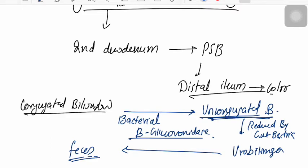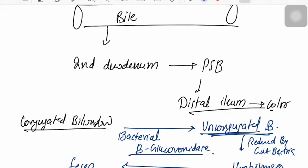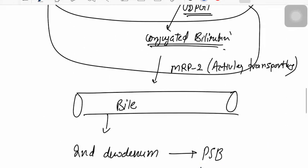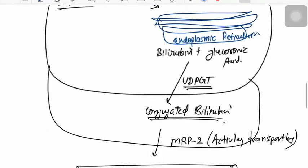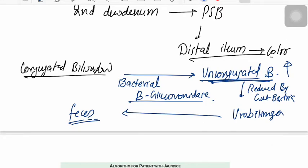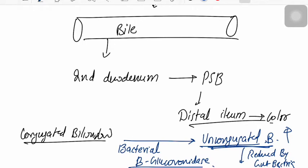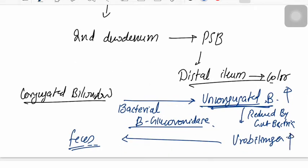It is the unconjugated bilirubin — not conjugated — that is excreted via urine. Increased urinary excretion of urobilinogen can be caused by: increased bilirubin production, increased hepatic reabsorption of urobilinogen from the colon, or decreased hepatic clearance of urobilinogen, which then diverts to the renal pathway.